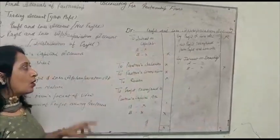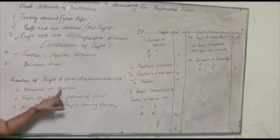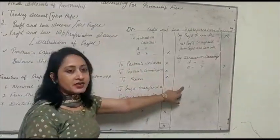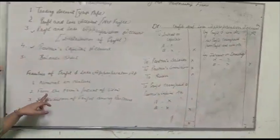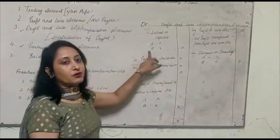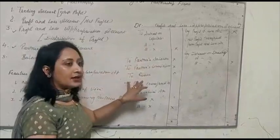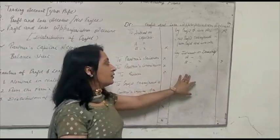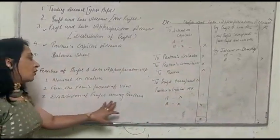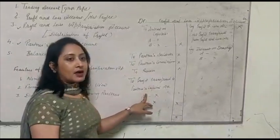First you will come to know about the features of profit and loss appropriation account. It is nominal in nature, meaning debit side shows expenses and credit side shows incomes and gains. Second, it is prepared from the firm's point of view — expenses on the debit side, income on the credit side. Third, it is prepared to distribute the profit among the partners.